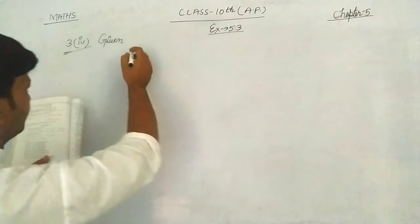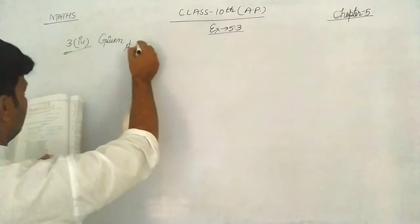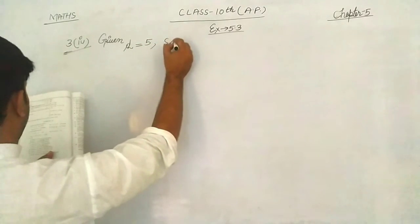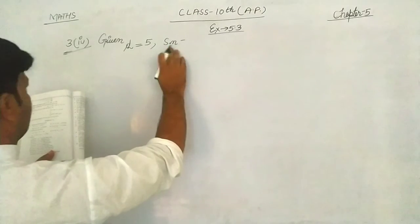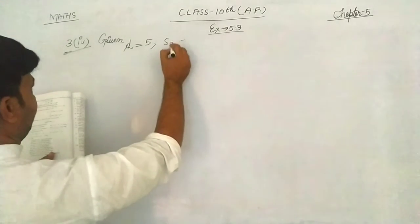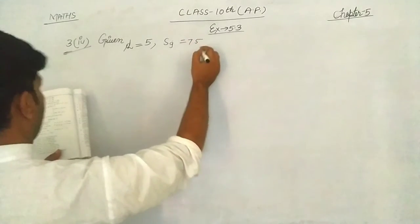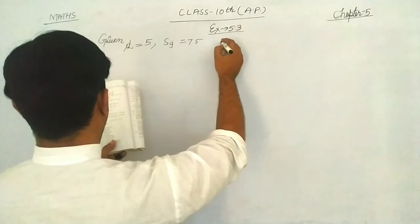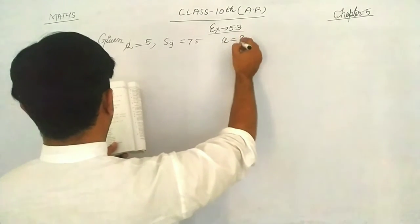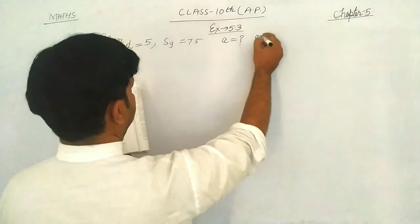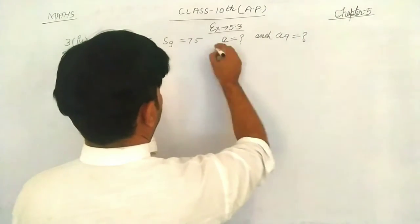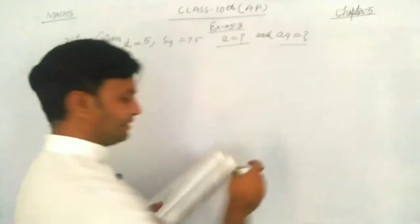Without wasting time, let's look at part five. Given: d equals 5, S9 equals 75, and we need to find a and a9 — two terms in total.